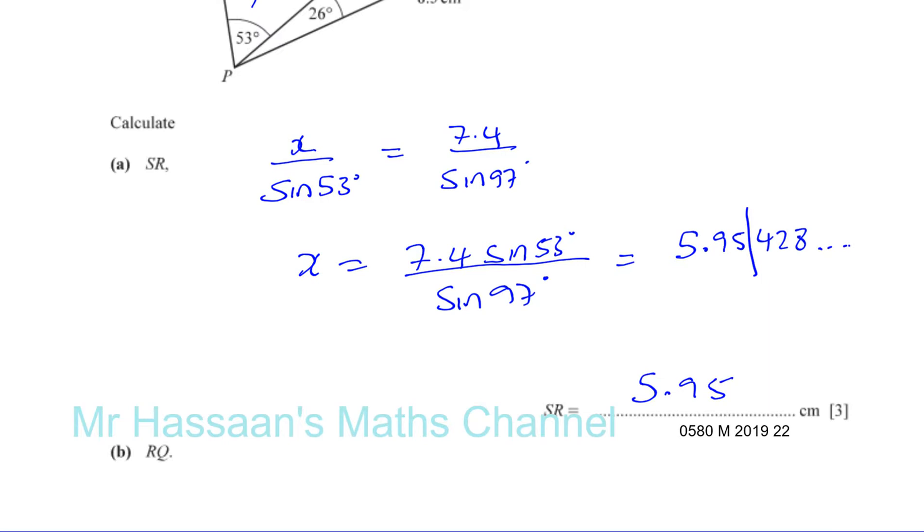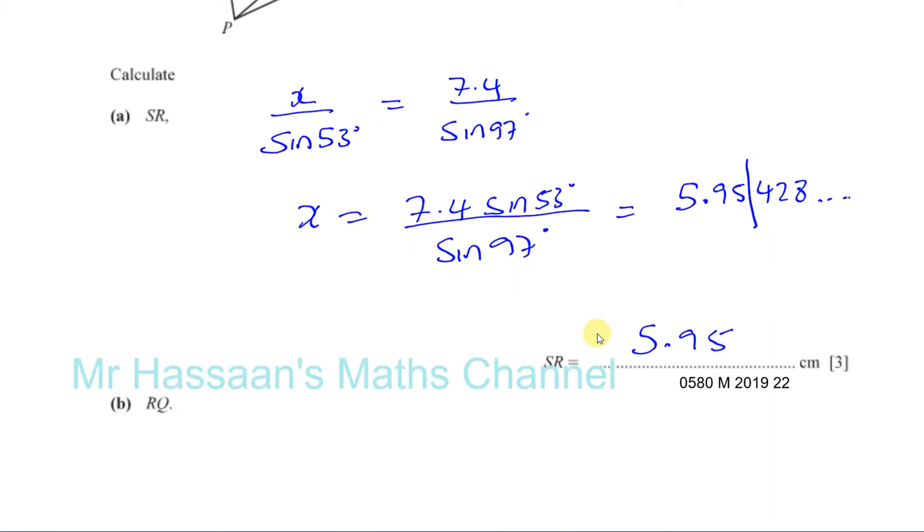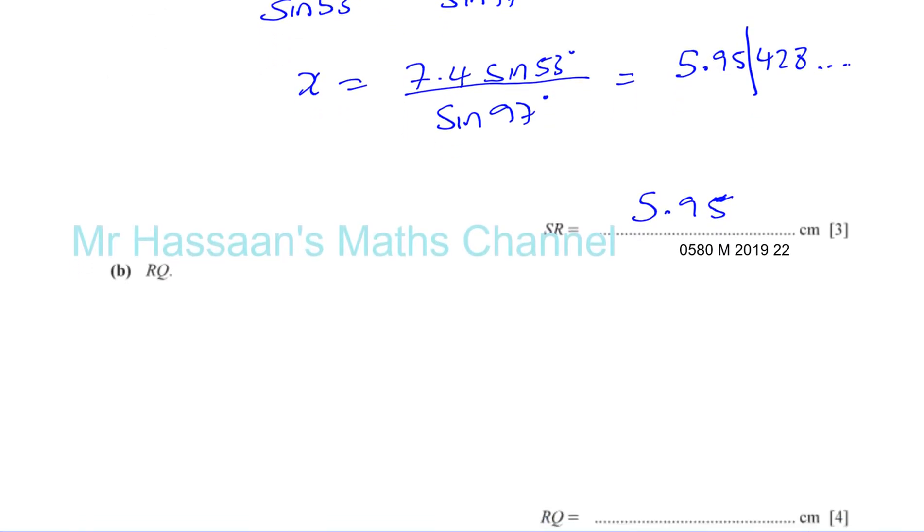So you always round to 3 significant figures if it's a length or anything basically, unless it's one of the exceptions which we went through: some of them are currency, angles, bearings, and so on.